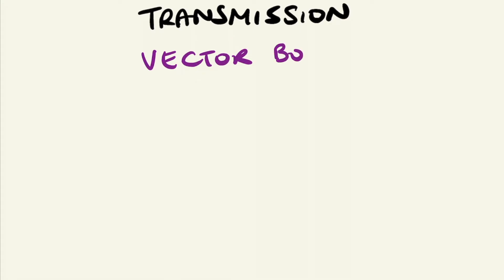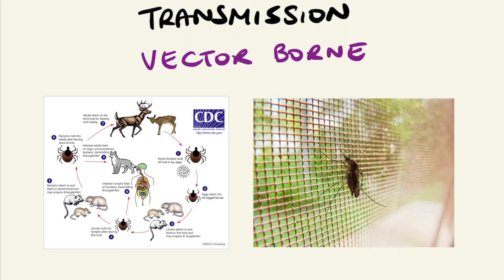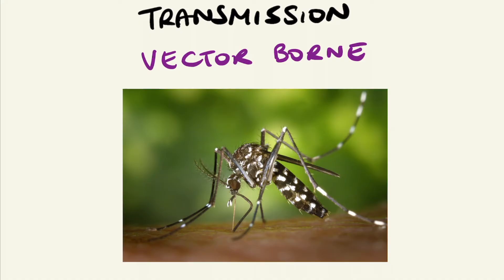Vector-borne disease: vectors are organisms which can carry disease-causing microorganisms and allow their transfer from one host to another. Vectors are often very mobile, allowing the distance of potential disease transmission to be high. Susceptibility can depend on a number of factors including geographical location, vector and host characteristics, as well as protective measures in place. Examples can include malaria-carrying mosquitoes.